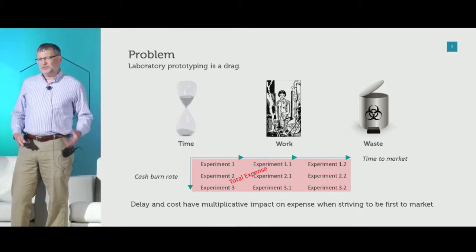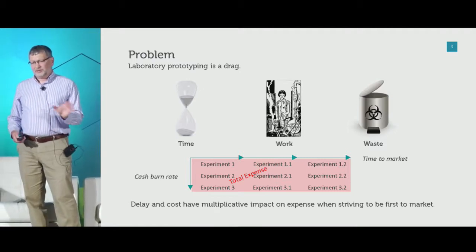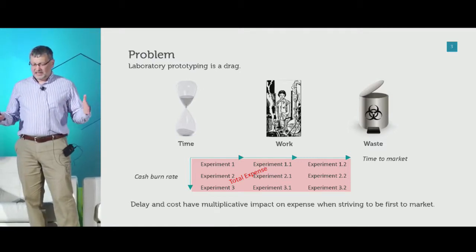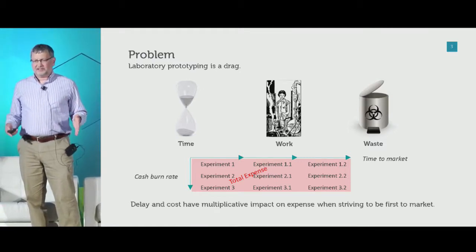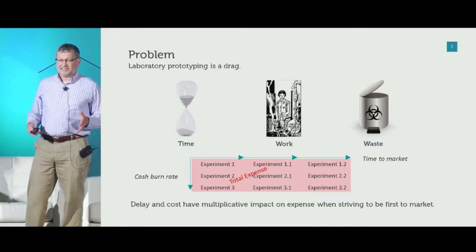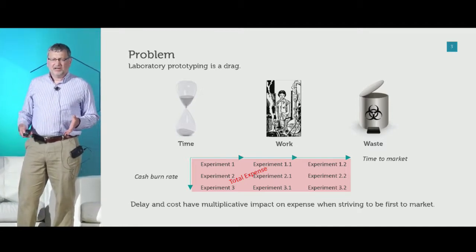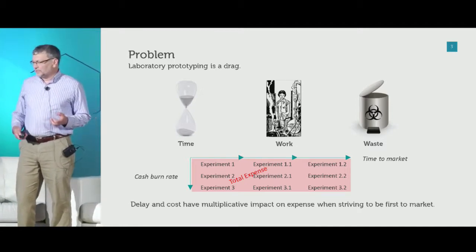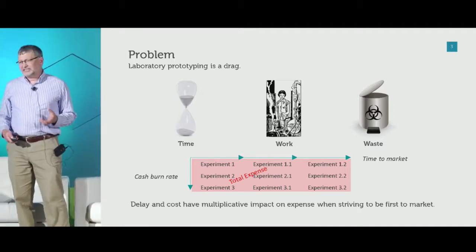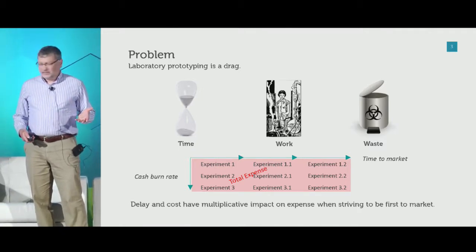Now, suppose we could reduce the time to market, or the experimental time, by an order of magnitude — a factor of 10. Maybe we could reduce the cost by a factor of 10 or 100. So all in all, we might be able to reduce the total expense by a factor of 1,000.